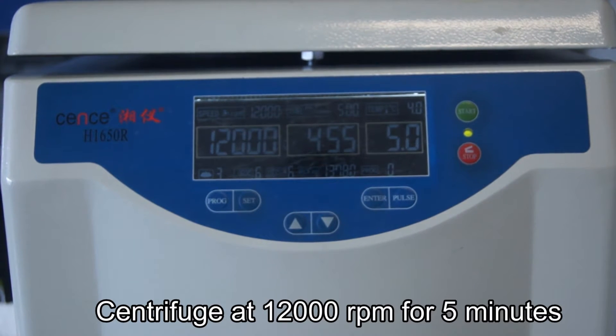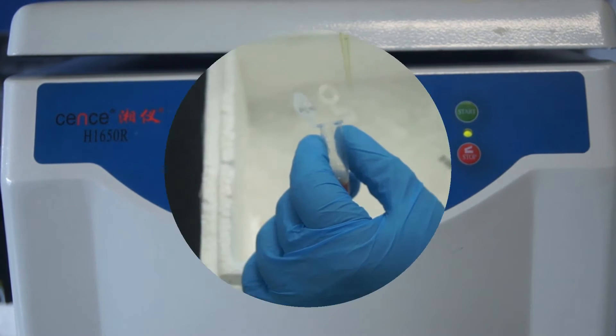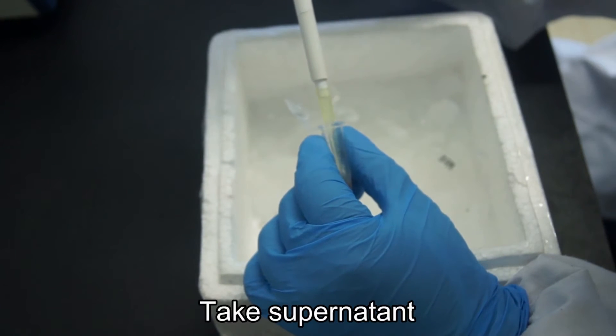Centrifuge at 12,000 RPM for 5 minutes at 4 degrees centigrade. Then take the supernatant.